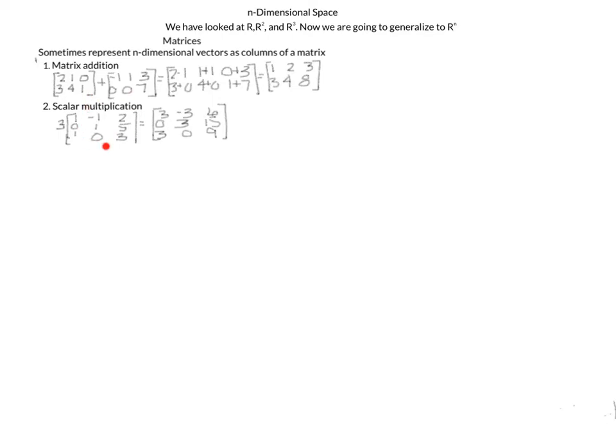To multiply a matrix by a scalar — here I have the scalar 3 — you just multiply each term by your scalar. So 3 times 1 gives me 3, 3 times negative 1 gives me negative 3, 3 times 2 gives me 6, 3 times 0 gives me 0, 3 times 1 gives me 3, 3 times 5 gives me 15, etc.